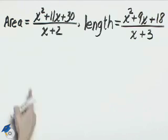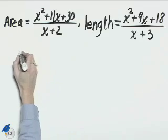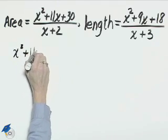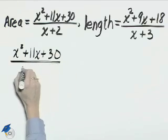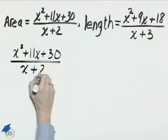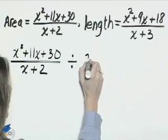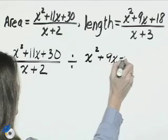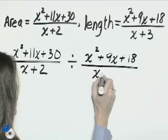The width is going to be the area divided by the length, so we should be able to write this as x squared plus 11x plus 30 divided by x plus 2, and that fraction, the area, will be divided by the length of x squared plus 9x plus 18 all over x plus 3.